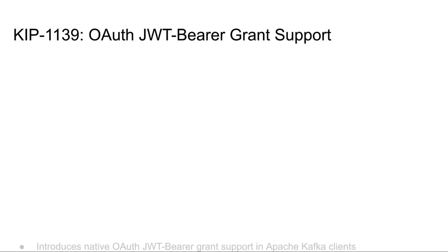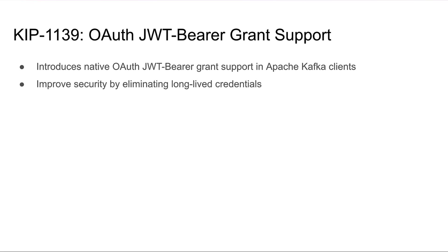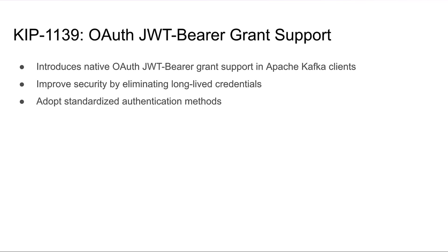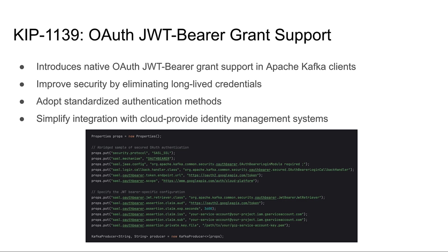KIP 1139 introduces native OAuth JWT Bearer grant support for Apache Kafka clients. Before, we relied on static username and password credentials when using authorization, which worked but is a little old-fashioned. JWT Bearer tokens from an existing OAuth 2 or OIDC identity provider are more standard now. This means you can drop the long-lived static credentials and use a more up-to-date authentication method, which will integrate better with the identity management systems your cloud provider wants you to use. Your identity provider will have documentation on how to find the settings you need, and then you'll add those details to your Kafka client configuration so that client application can securely connect to your Kafka cluster.